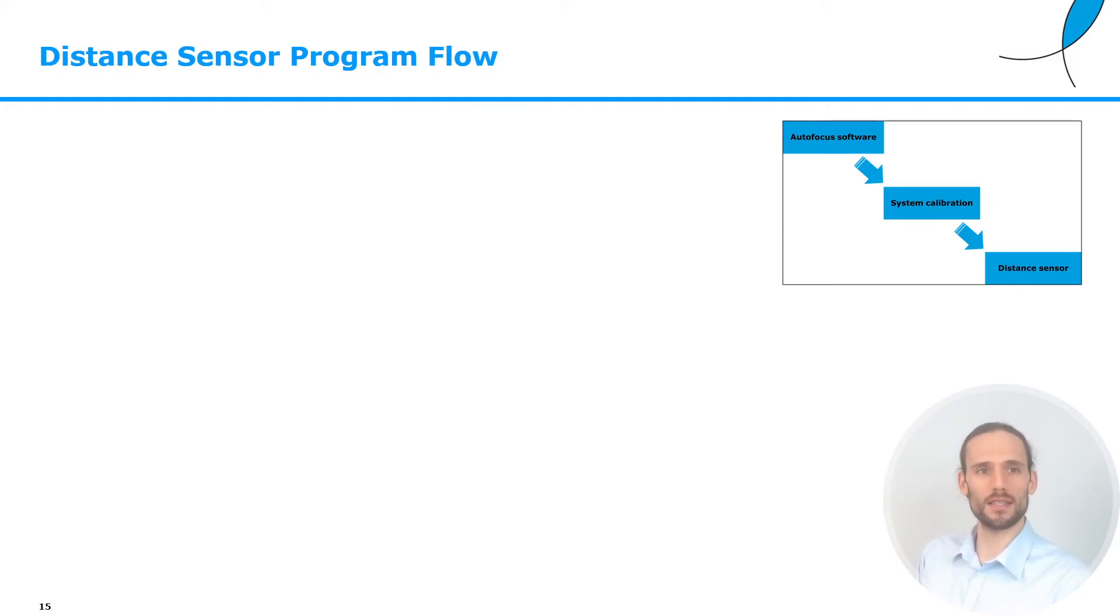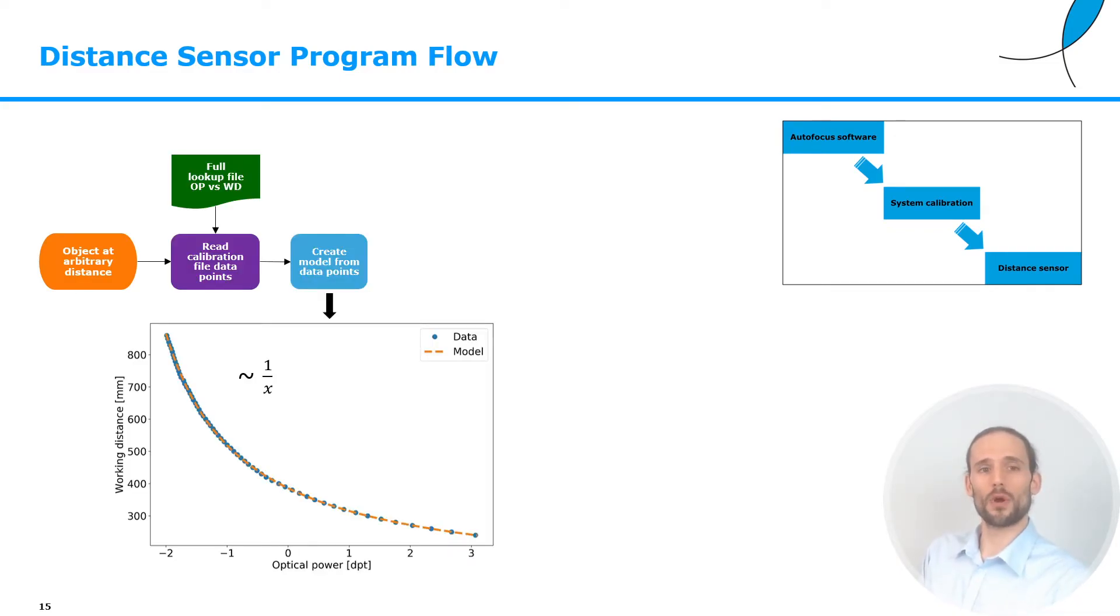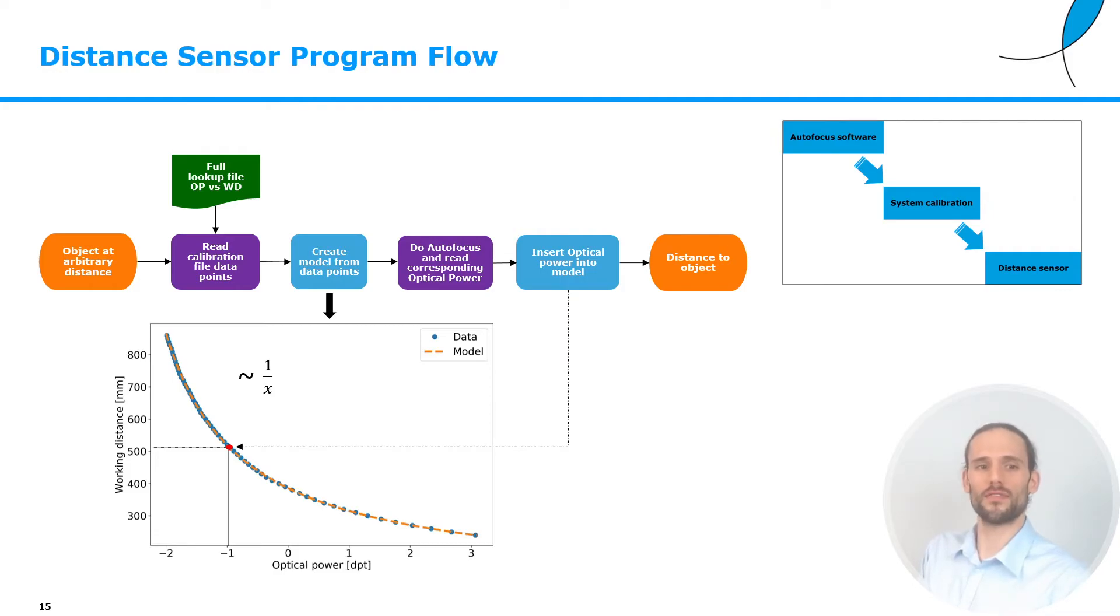Now, finally, we are ready to look at the distance sensor program flow. We're going to put an object at an arbitrary distance, we're going to read out the calibration file that we just created, and we're going to create a model from the data points. For example, here we have that the data points have a trend that looks like the form of 1 over x, and this is typical for a front lens configuration. If one would have a back lens configuration, this relationship would be more linear. Now, we will run the autofocus and read the corresponding optical power, we will insert this read out optical power into the calibration, and we will retrieve our distance measurement.